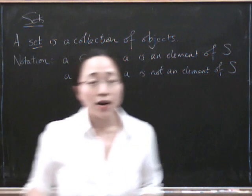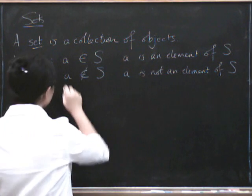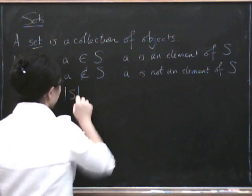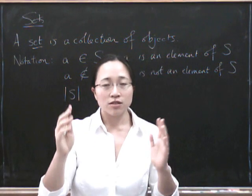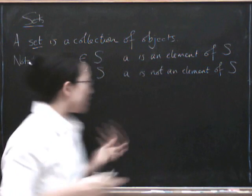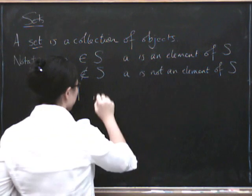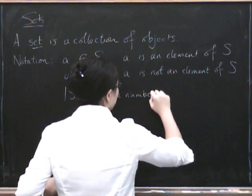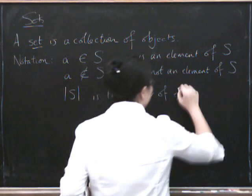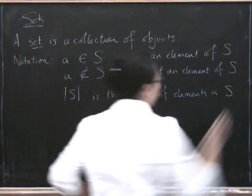And we might want to know how many things are in our set. So we have a piece of notation for that as well, where we put kind of fences around our S. Which usually in math means the size of something if it's finite. So |S| is the number of elements in S.